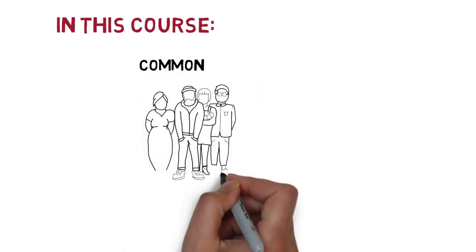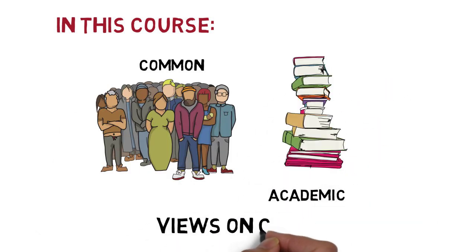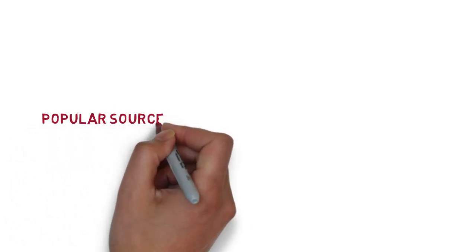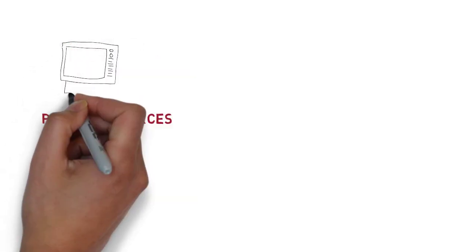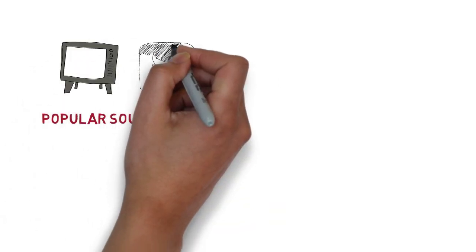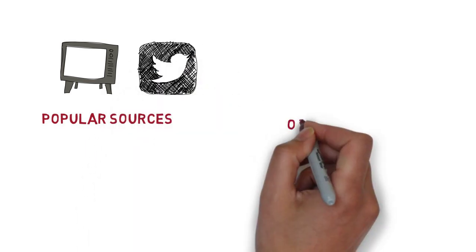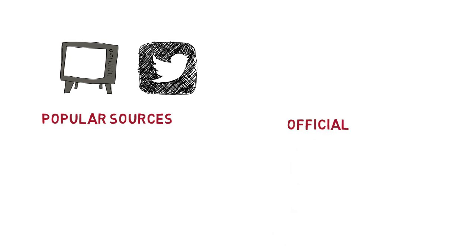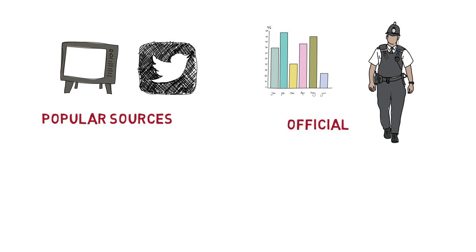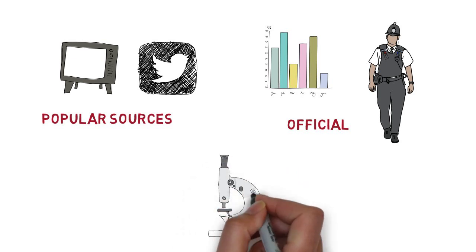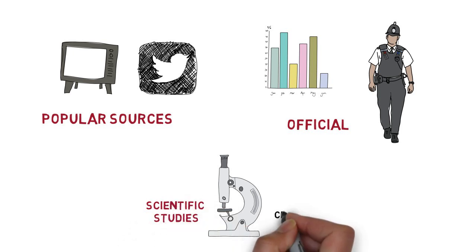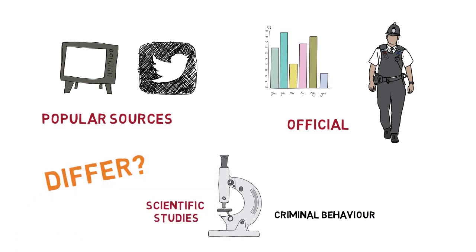In this introductory course, you will learn to distinguish common understandings of crime from academic or criminological views on crime. We will discuss questions such as: why do we need to study crime? How do popular sources of knowledge, such as media, television, and social media, depict crime and shape our understanding? What do official sources of knowledge, such as governmental statistics and police reports, tell us about crime? How about science — what are the findings of scientific studies on criminal behavior? How do they differ, or how are they similar?